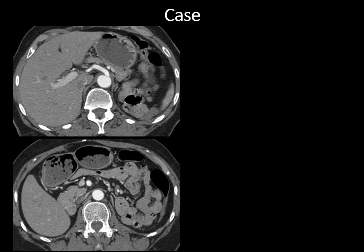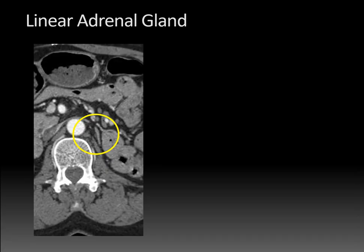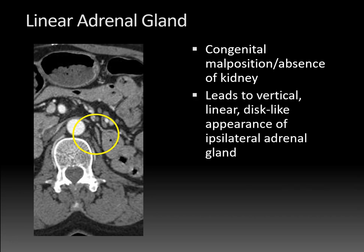In this case, the left adrenal gland has not really an inverted V or Y configuration, but more of a linear configuration. Scrolling inferiorly into the pelvis, there is an ectopic kidney. The linear adrenal gland indicates congenital malposition or absence of the kidney — in other words, renal ectopia or renal agenesis — and that leads to a vertical, linear, disc-like configuration of the ipsilateral adrenal gland, sometimes described as a pancake adrenal gland or the lying down adrenal sign.